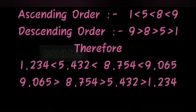Now arranging in ascending order: one thousand two hundred and thirty-four is the first number, five thousand four hundred and thirty-two is the second, eight thousand seven hundred and fifty-four is the third, and nine thousand and sixty-five is the fourth. In descending order, the biggest number first: nine thousand and sixty-five, then eight thousand seven hundred and fifty-four, then five thousand four hundred and thirty-two, and one thousand two hundred and thirty-four is the fourth.